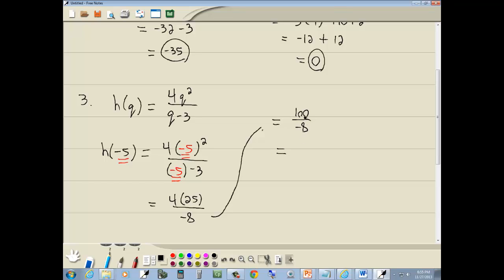And top and bottom are both divisible by 4. 100 divided by 4 is 25. And negative 8 divided by 4 is negative 2. So our answer is negative 25 halves. Now I could have simplified that right at this step. But the order of operations says do the top part completely. Do the bottom part completely. Then handle the fraction. So that's why I stuck to the steps there.